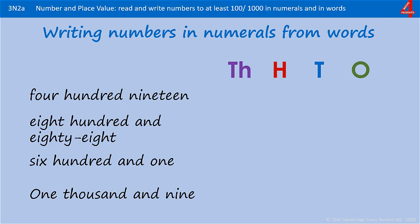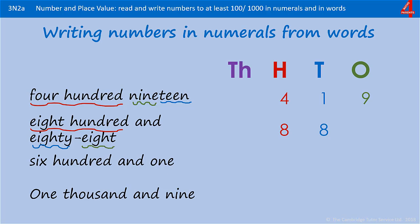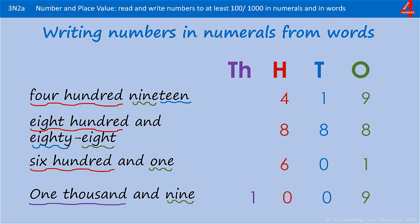Here are some for you to try — the numbers have been written in words and you need to write them using the correct numerals in the correct place. Pause the video and have a go. The first one: four hundred and nineteen — four hundred, and remember that nineteen is one ten and nine ones. The next one: eight hundred and eighty-eight — eight hundreds, eighty is eight tens, and then eight ones. The next one: six hundred and one — six hundreds, nothing in the tens, and just one in the ones column. The final one: one thousand and nine — one in the thousands column, no hundreds, no tens, but nine in the ones.